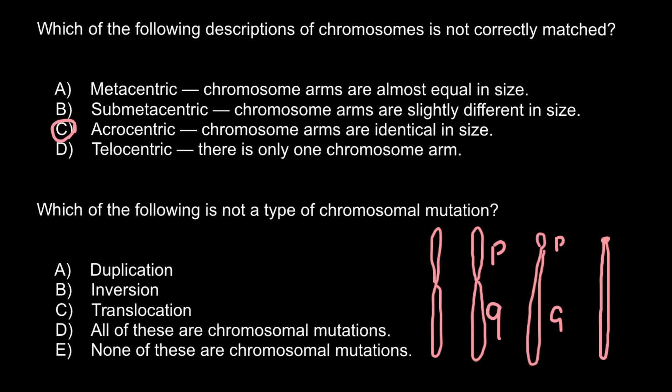Answer C, translocation, is an example when two non-homologous chromosomes exchange arms or fragments of arms. After such an exchange, we can find a piece of chromosome number 10 on chromosome number 15, and a piece of chromosome 15 on chromosome number 10. These chromosomes are not homologous — crossing over normally occurs between homologous chromosomes during meiosis, not between non-homologous ones. But this is still a type of mutation, so the correct answer is answer D — all of the above are chromosomal mutations.